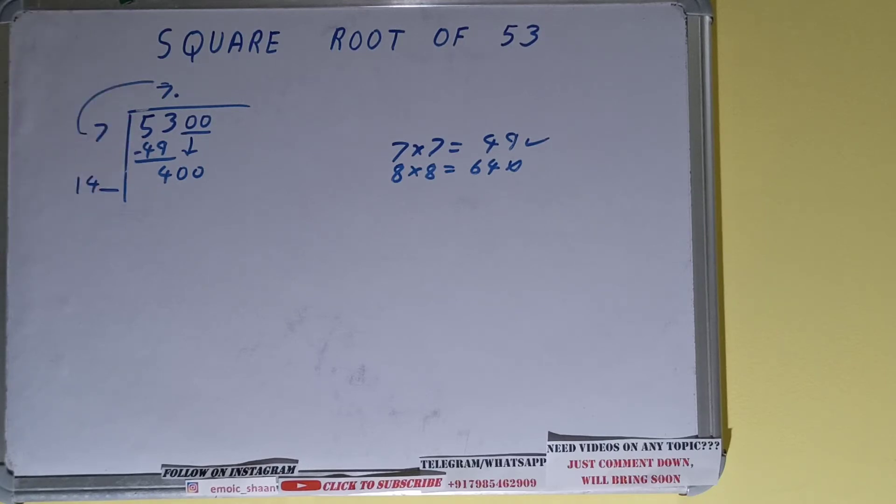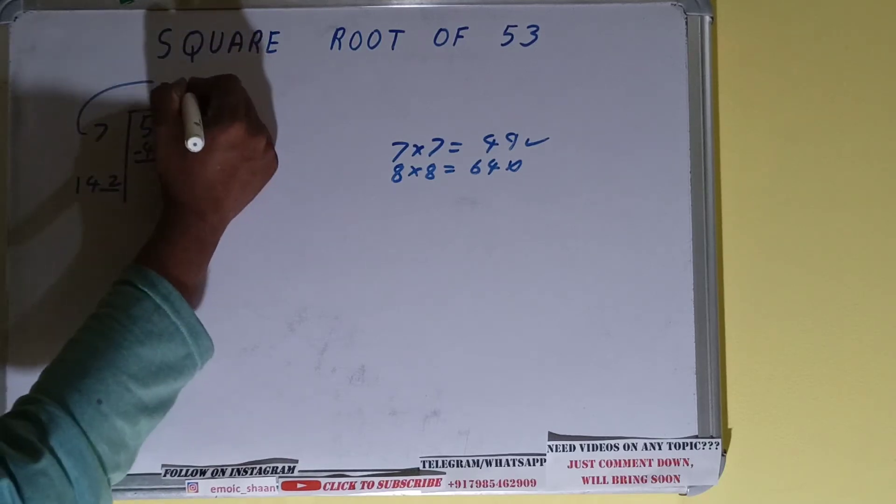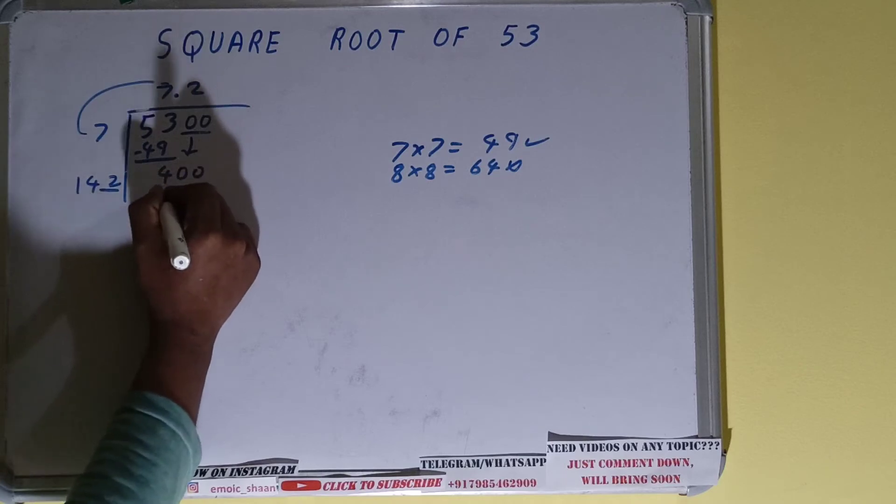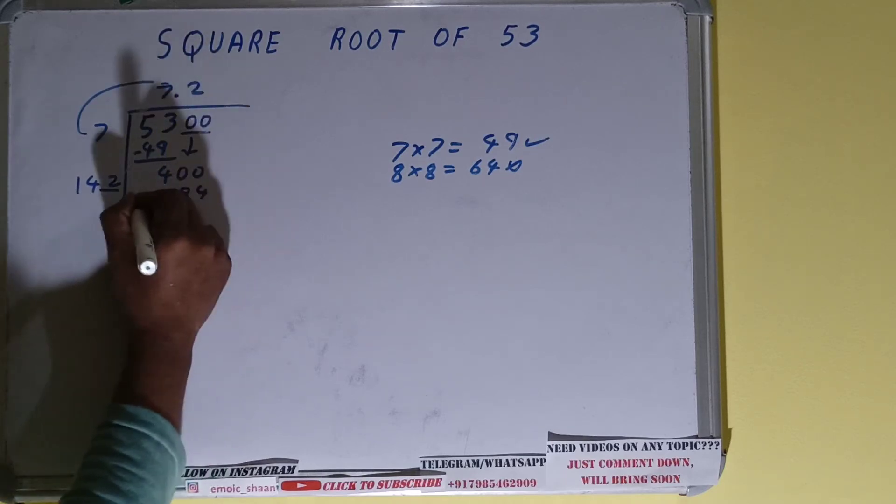Okay, so what number should I take so that it is less than 400? If I take 3, 143 is 429, so it will be greater than 400. So we have to take 2. We have no choice. It will be 284, left with 116.